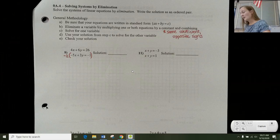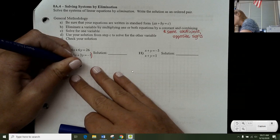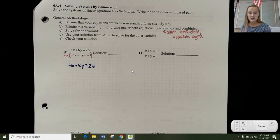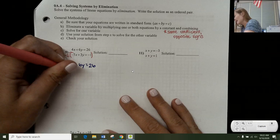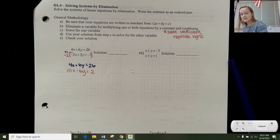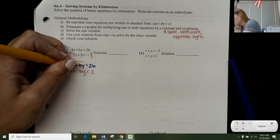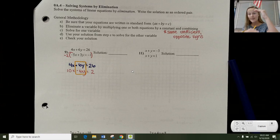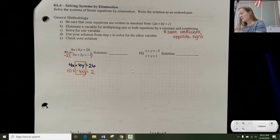So my top equation isn't going to change at all. So I'm going to keep it 4X plus 6Y equals 26. My bottom equation is going to change, and I'm going to distribute the negative 2. So this becomes 10X minus 6Y equals 2. Now what you notice here is you now have that same coefficient opposite signs in these Ys. So at this point, I can combine the two equations by adding down. And that's how I'm going to get to that elimination.